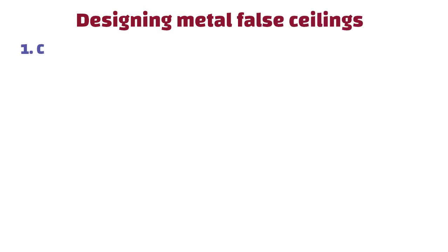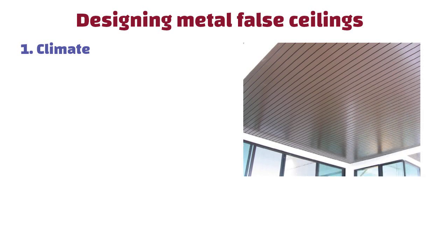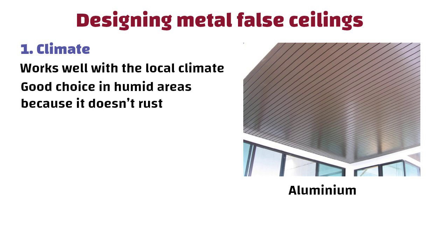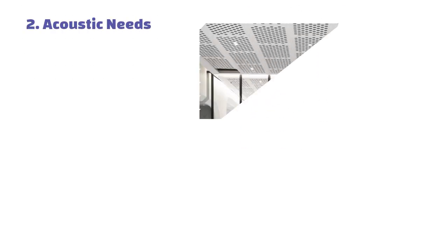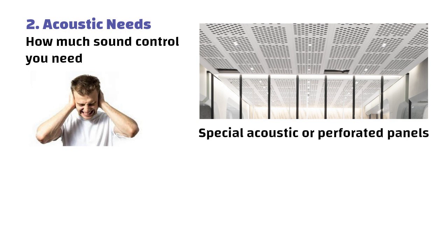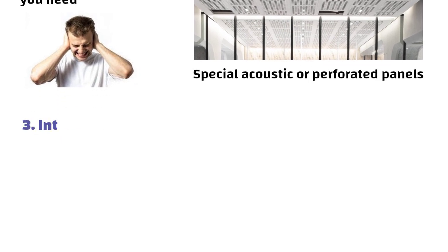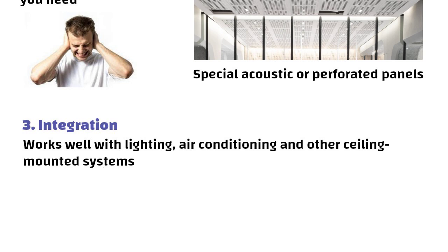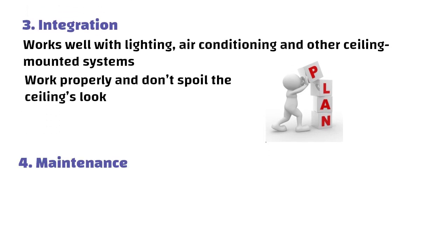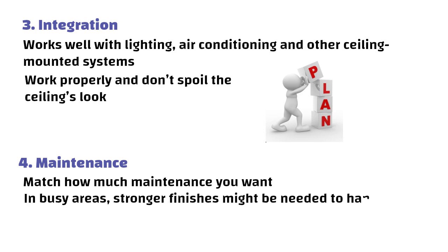Now let us understand what things we need to consider while designing metal false ceilings. First, Climate. Pick a metal ceiling material that works well with the local climate. For example, aluminum is a good choice in humid areas because it doesn't rust. Second, Acoustic needs. Think about how much sound control you need. If noise is a concern, consider using special acoustic or perforated panels to improve sound quality in the space. Third, Integration. Make sure the metal ceiling works well with lighting, air conditioning and other ceiling mounted systems. Good planning ensures the systems work properly and don't spoil the ceiling's look. Fourth, Maintenance. Choose materials and finishes that match how much maintenance you want. In busy areas, stronger finishes might be needed to handle wear and tear.